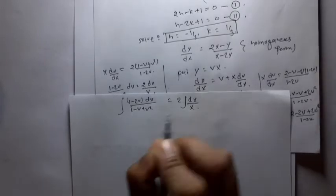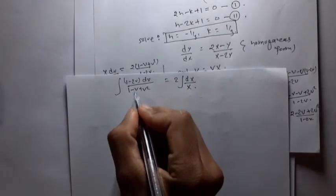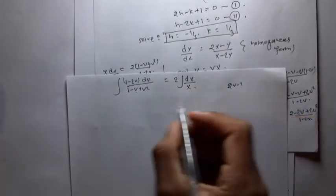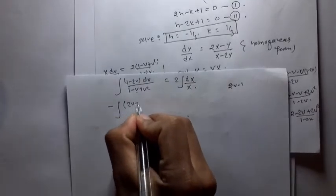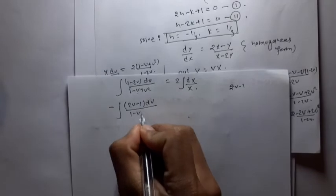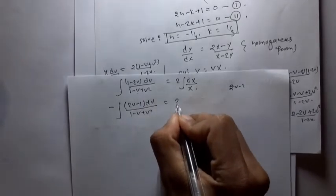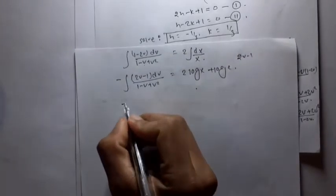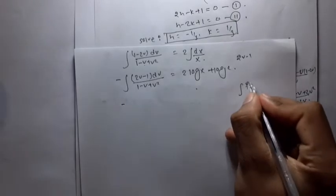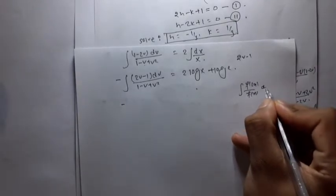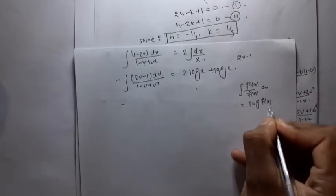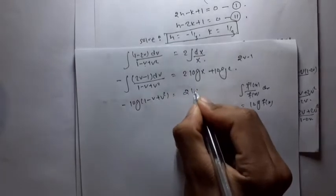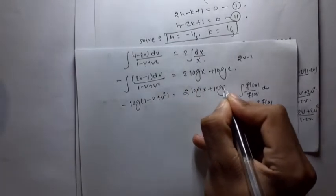Taking out the minus sign: -integral of (2v - 1)/(1 - v + v²) dv = 2 log X + log c. Since the numerator is the derivative of the denominator, this integral is log(1 - v + v²). So we get: -log(1 - v + v²) = 2 log X + log c.